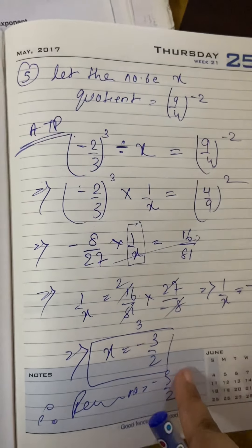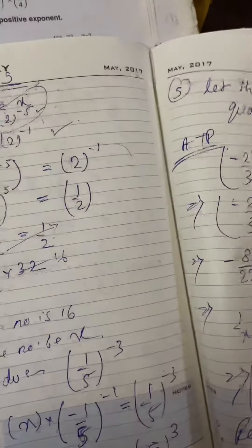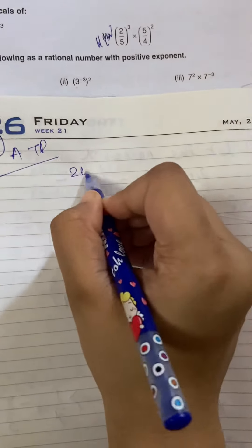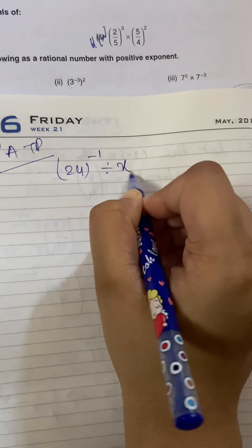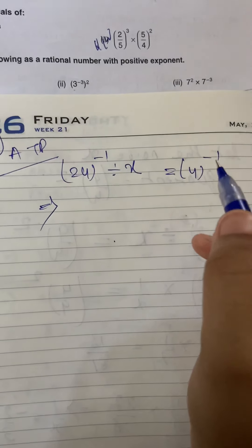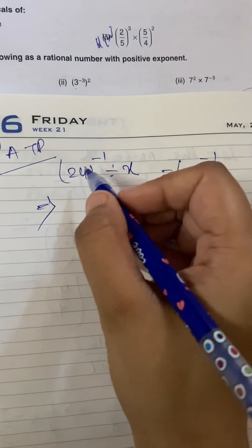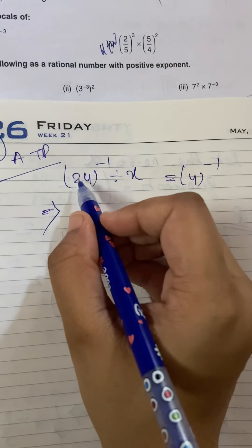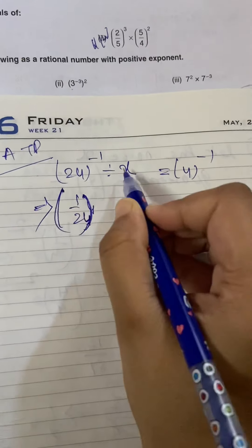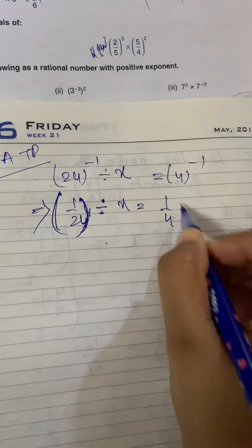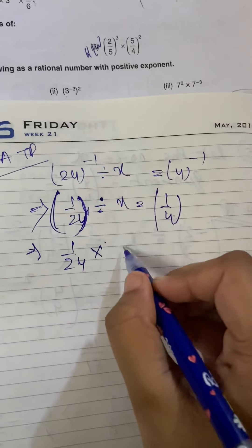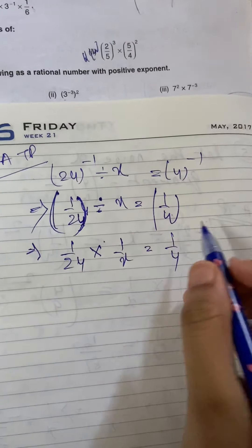Isi tarah se jab fourth question me equation banayenghe, vahaan ek twist aur ayega. Voh equation banayegha 24 to the power minus 1 divided by x equals to 4 to the power minus 1. To, yahaan bhoat carefully karna hooga. Division sibse pahalye toh sara minus sign hattana. 24 to the power minus 1 hai, 1 by 24. Yhe division abhi rhenne do. Phir 1 by 4. Ab next step mein karna ki 1 by 24 division ke badale into x ke badale 1 by x. Phir cross multiply karna.